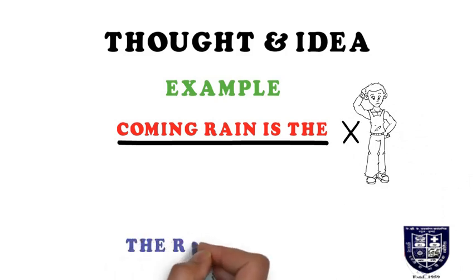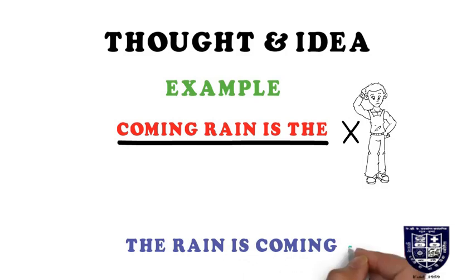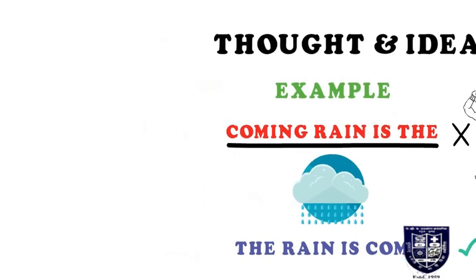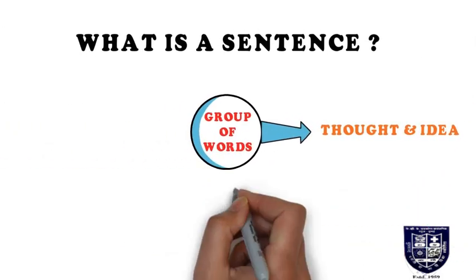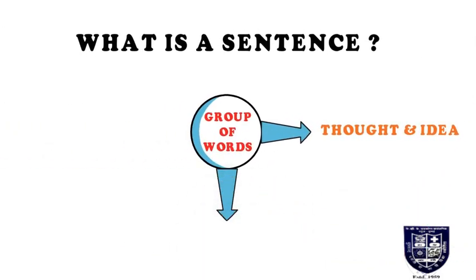Well, it is just a group of words; it is not conveying any meaning. Rearranging the words, the sentence becomes 'the rain is coming.' So that is the correct one.